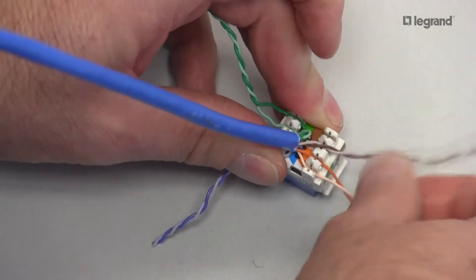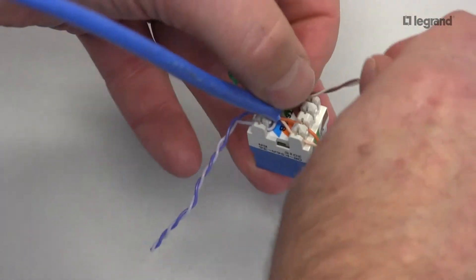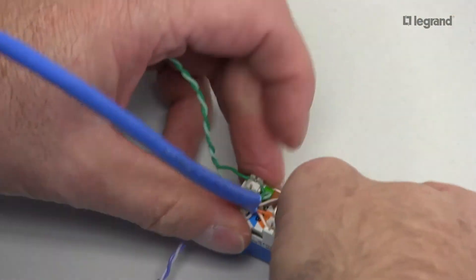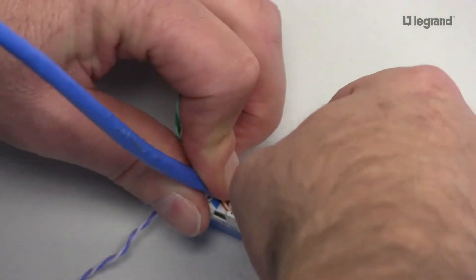Keep in mind, you want to keep your twist pair close to the IDC as possible without being too tight, and I'll explain that in a minute.